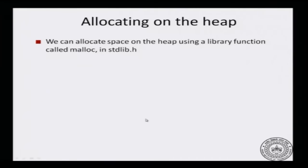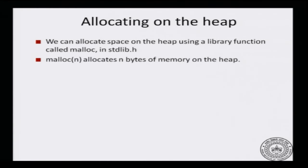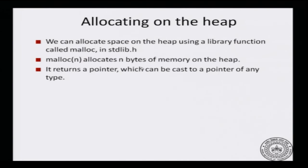How do you allocate things on the heap? There is a standard library function called malloc in stdlib.h which can be used to allocate space on the heap. If you call malloc(n), where n is a positive integer, it will allocate n bytes of memory on the heap and return a pointer to the first location of the allocated space. That pointer can be converted to a pointer of any type. Malloc just allocates n bytes; you may want to interpret those bytes as n/4 integers, in which case you convert that pointer to an int pointer.